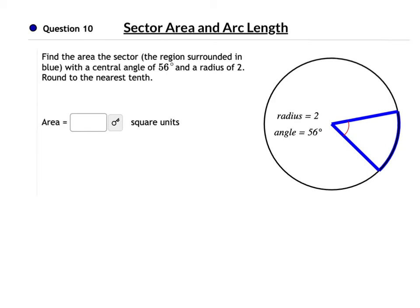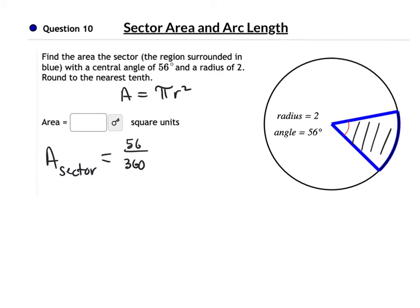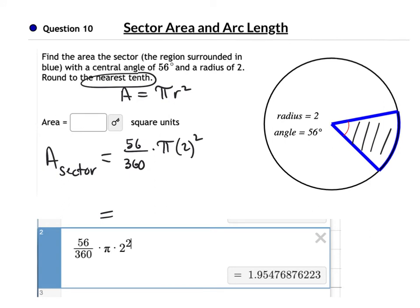This time we're going to find the area, using a different formula. We know that area is pi times the radius squared, but the process is exactly the same. The area of this sector equals 56 over 360 — that fraction of the circle — times pi times the radius squared. We're rounding to the tenth, so just put that in Desmos. Rounding to the tenth, this is 1.9, but the 5 bumps the 9 to a 10, giving 2.0, or 2 square units.